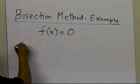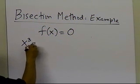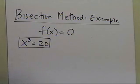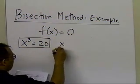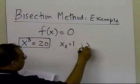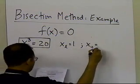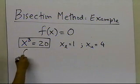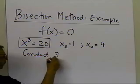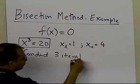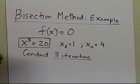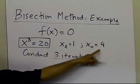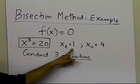The example we're going to take is: find the root of the equation x cubed equal to 20. The initial guess can be 1, the other initial guess can be 4, and we're asked to conduct 3 iterations.